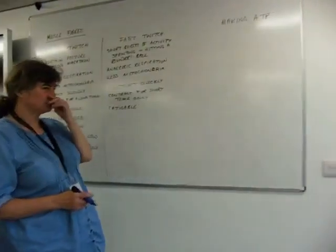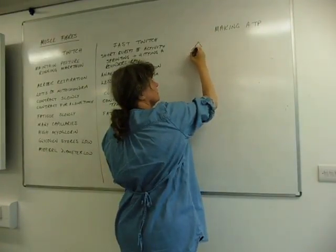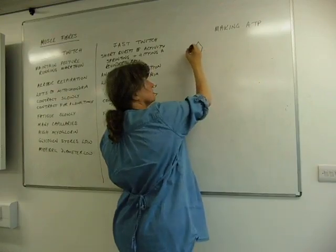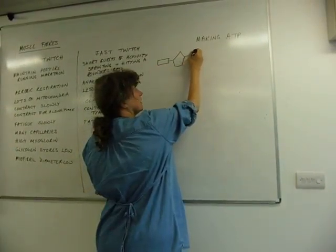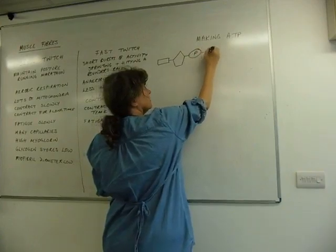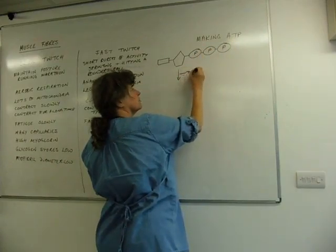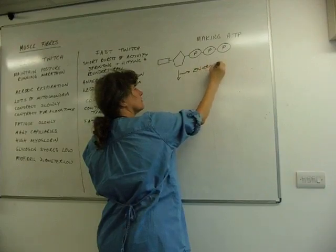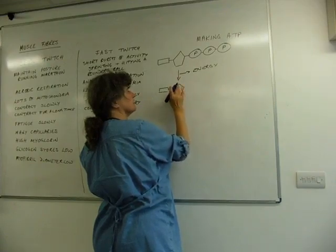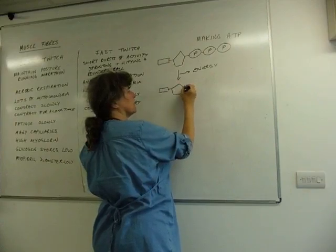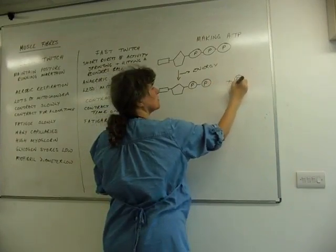If you remember from the core biology that you've done, ATP is made of pentose sugar attached to a nitrogenous base, attached to three phosphates. And if we want some energy out of that, we're going to break it down into ADP, which unsurprisingly has its pentose sugar, its nitrogenous base, two phosphates. And, of course, we'll release phosphate from that.